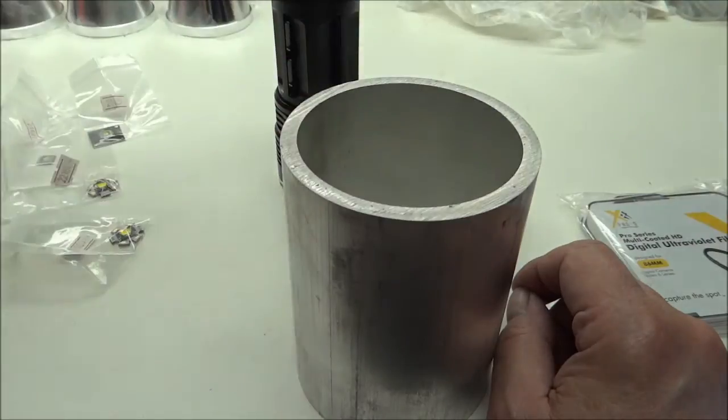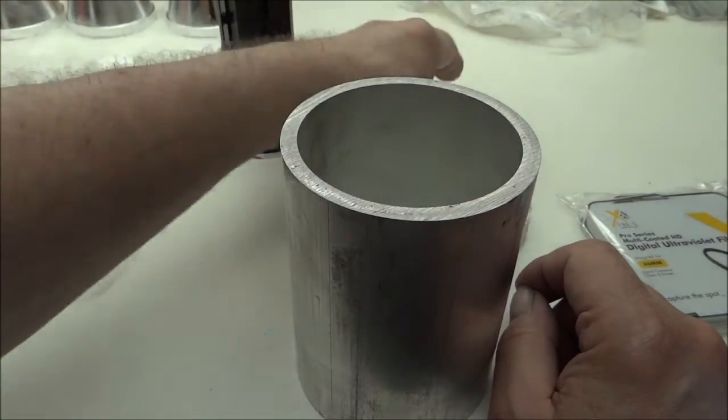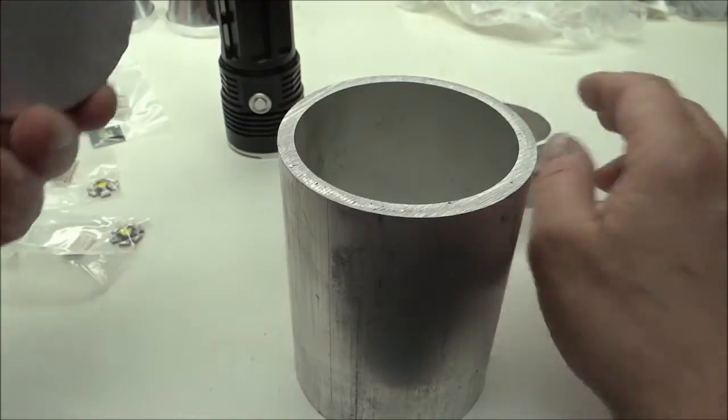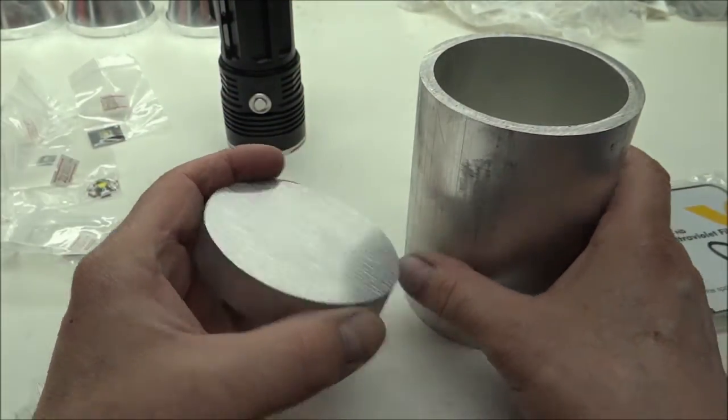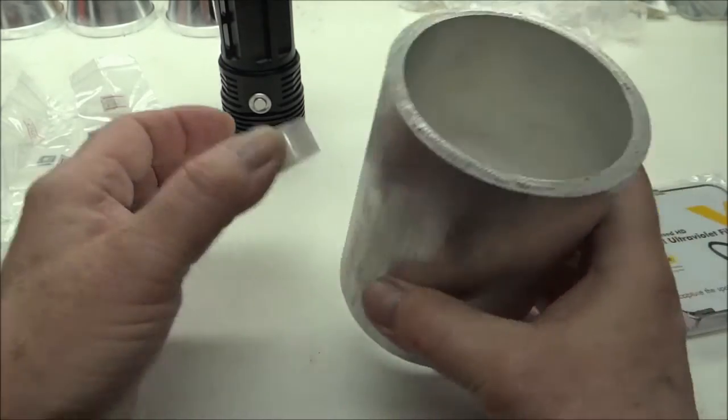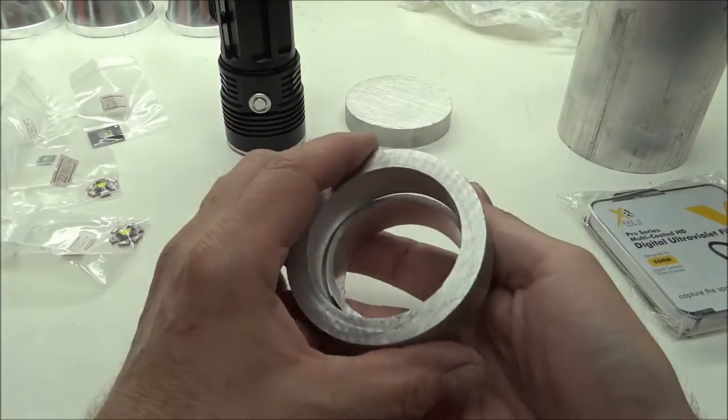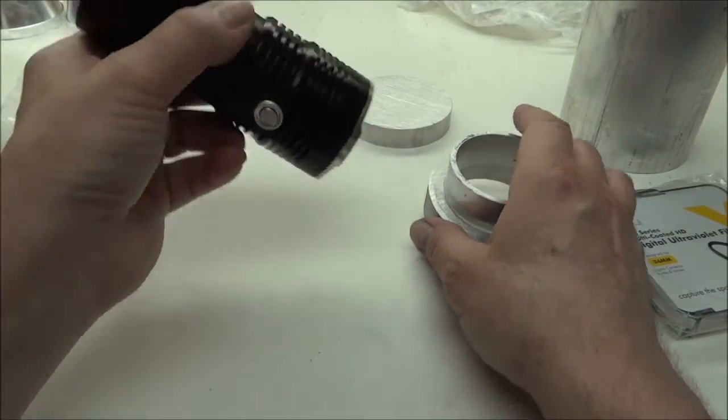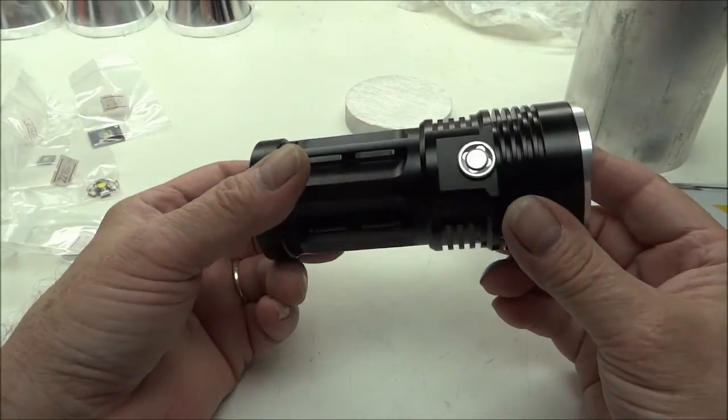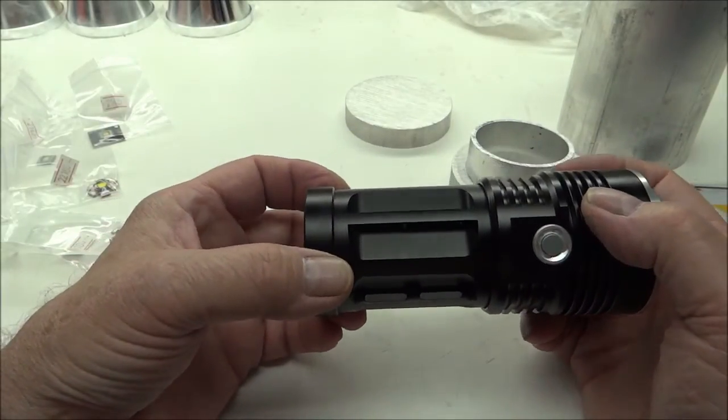Underneath the reflector I have a fairly good size chunk of aluminum in there on the back side. And then there'll be a couple pieces of tubing to adapt down to use an SRK, Sky Ray King black.